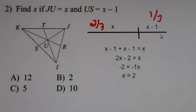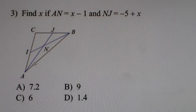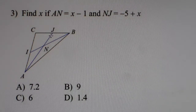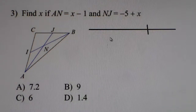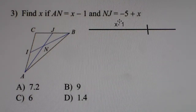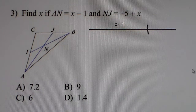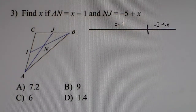Those are the two styles we'll practice bouncing back and forth between. Problem number 3: find x if AN, the 2-thirds part, is x minus 1, and NJ, which is the 1-third part, is negative 5 plus x. On the number line: x minus 1 is in the 2-thirds spot, and negative 5 plus x is in the 1-third spot.